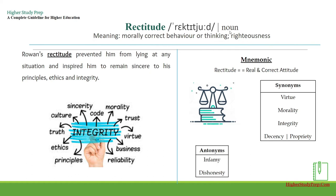Rectitude — it's a noun which means morally correct behavior or thinking, righteousness. For example, Ruan's rectitude prevented him from lying in any situation and inspired him to remain sincere to his principles, ethics, and integrity. The mnemonic for remembering the word rectitude can be broken up as 'real and correct attitude.' Some synonyms can be virtue, morality, integrity, decency, or propriety. Some antonyms can be infamy, dishonesty.